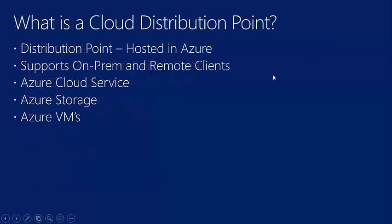What is a cloud distribution point? Simply put, a cloud distribution point is a distribution point hosted in Azure — hosted as a platform-as-a-service configuration. A cloud distribution point supports both on-prem and remote clients. When you create it, it creates an Azure cloud service with associated Azure storage and two Azure virtual machines. All of that makes up what we call the cloud distribution point.